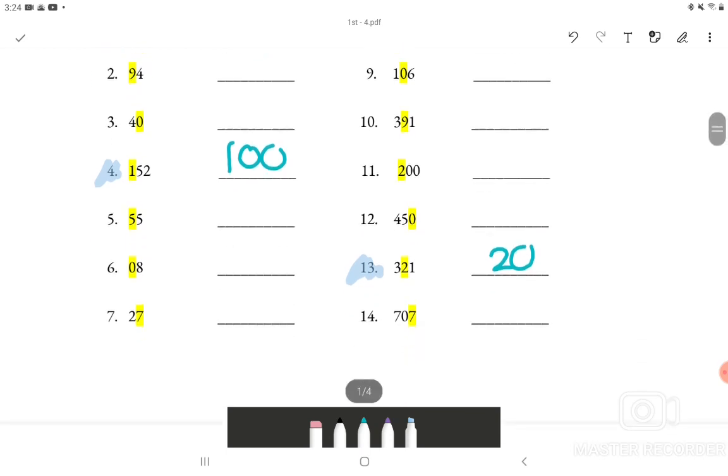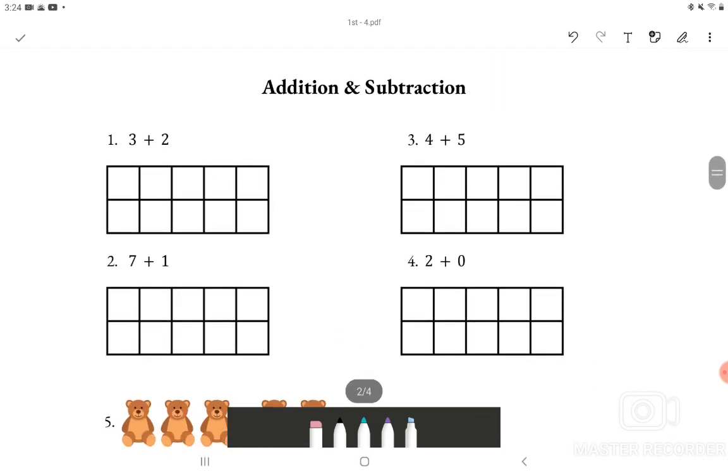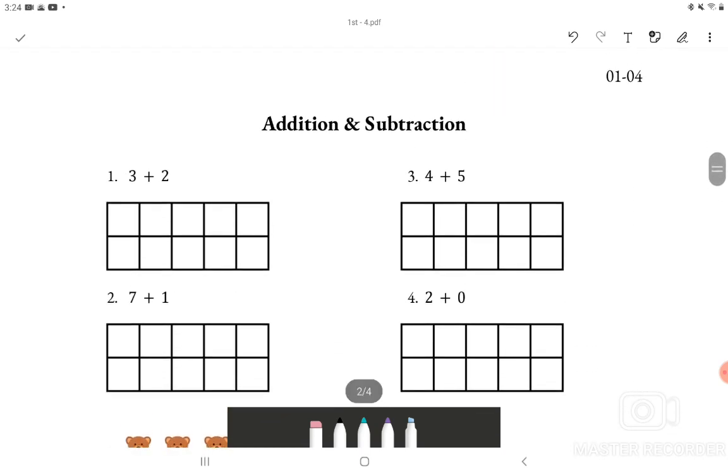Moving on to the next section we have addition and subtraction. And I will just do the first problem which is 3 plus 2. Using this box we would do addition problem. And it will be 3 plus 2. And when we count all of them we have 1, 2, 3, 4, 5. So we know that the answer for number 1 is 5.